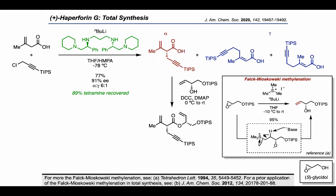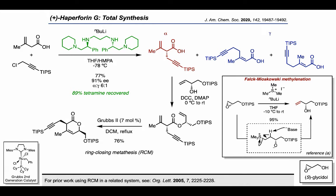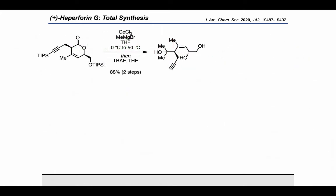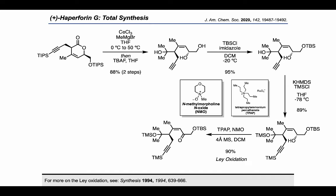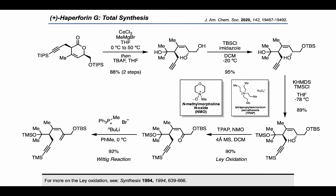Having installed the allylic alcohol fragment, they utilized the terminal alkene immediately in a ring-closing metathesis using Grubbs second-generation metathesis catalyst. Having arrived at one of the key intermediates proposed in the retrosynthetic analysis, the authors carried out a double Grignard addition using methylmagnesium bromide, followed by treatment with TBAF to remove the TIPS groups. The authors then proceeded with TBS protection of the primary alcohol and TMS protection of the alkyne. The Ley oxidation converted the secondary alcohol into a ketone, which was used directly in a Wittig reaction to install the 1,1-disubstituted alkene needed in the next step.